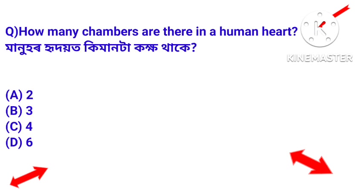How many chambers are there in the human heart? Manuhar petot kimaanta koikho thake? Answer: Four. The human heart has four chambers.